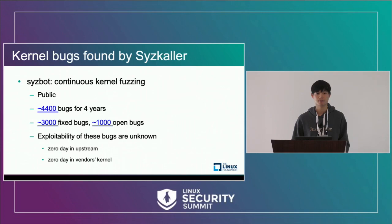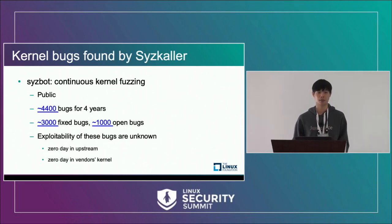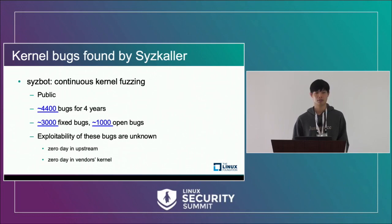How could we know that something is a bug and not know the exploitability? For exploitability, if a bug is exploitable, we think the bug has exploitability. But not all bugs are exploitable. For successful exploitation, we think the attacker can get an ideal operation on the system, but not all bugs allow them to do that.